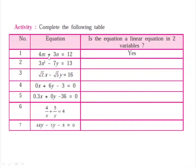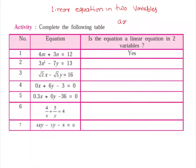The first example which is solved is 4m plus 3m equals 12, and it is given that it is a linear equation in two variables. As we know, the standard form of a linear equation in two variables is ax plus by plus c equals 0. There are two variables in this equation, that is x and y, that's why it is called a linear equation in two variables. Along with it, a, b, and c are any three real numbers.